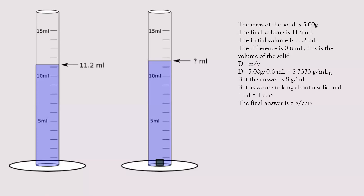However, the volume has only one significant figure, so you must report only one significant figure in your answer. The answer is 8 grams per milliliter. And since we are talking about a solid, and one milliliter is equivalent to one cubic centimeter, the density of the solid is 8 grams per cubic centimeter.